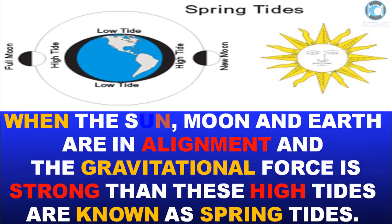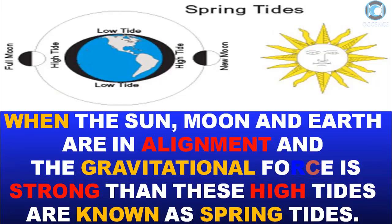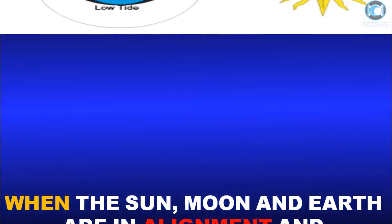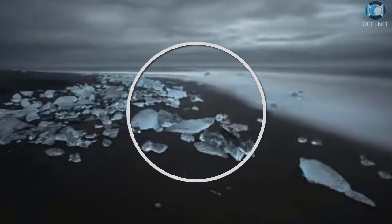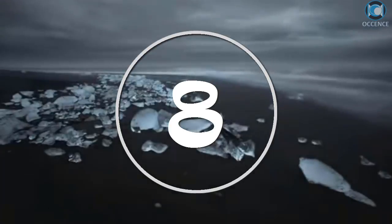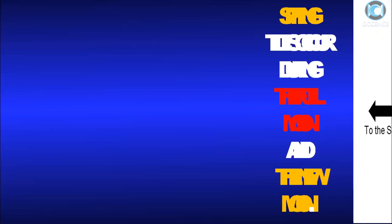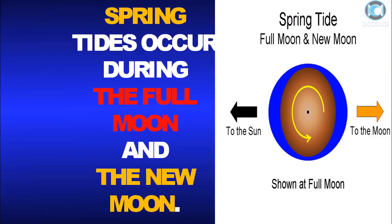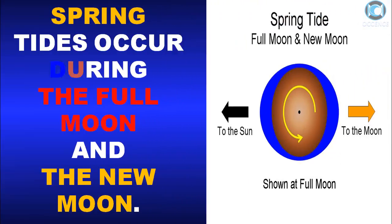When the Sun, Moon, and Earth are in alignment and the gravitational force is strong, then these high tides are known as spring tides. Spring tides occur during the full moon and the new moon.